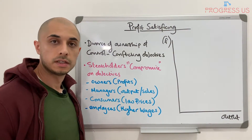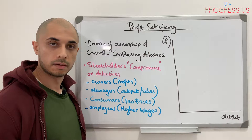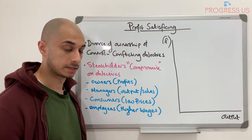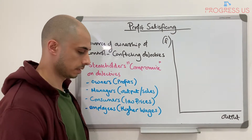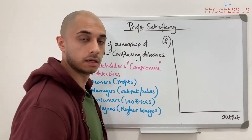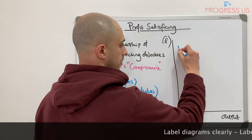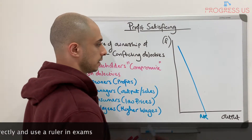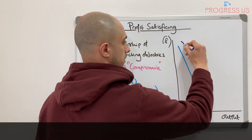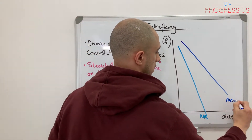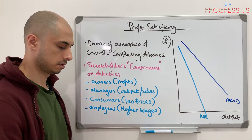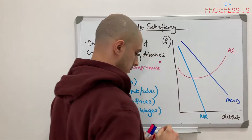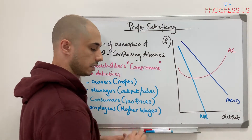The diagram for profit satisficing is fairly straightforward — it's again a profit maximisation diagram, but the output level is a bit different. We need to draw the standard supernormal profit diagram. So we need our marginal revenue curve, our average revenue and demand curve, our average cost curve, and finally our marginal cost curve.